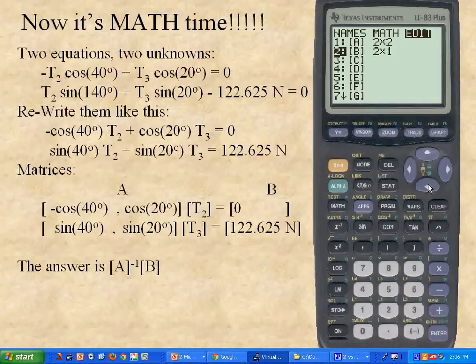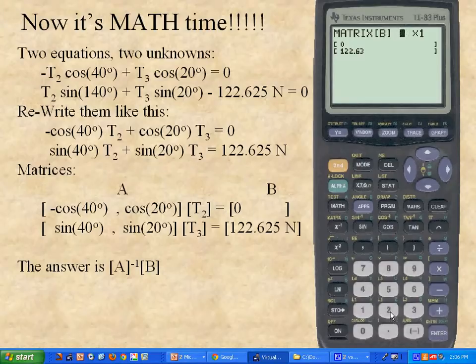Now go down to B. And we're going to edit B. Okay? Yeah? So B, hit enter. And if B is not a 2x1, make it a 2x1 by typing 2, enter, 1, enter. Right? And then the top of B is 0. Right? So that one's 0. You can type a 0. A clicky, enter. And then this one is 122.625. All right.